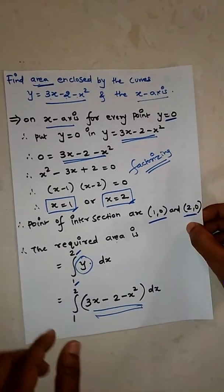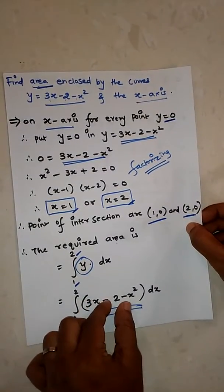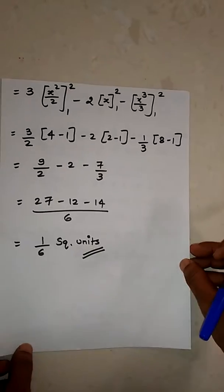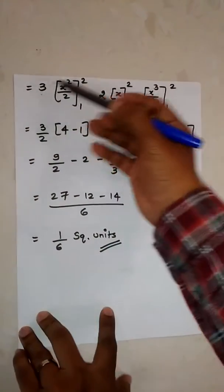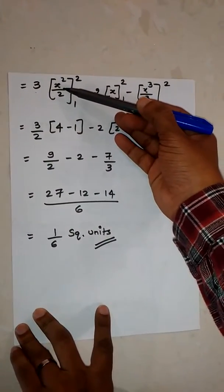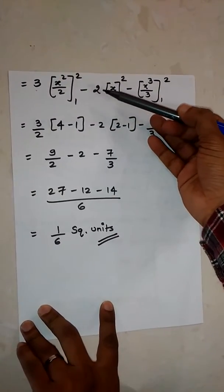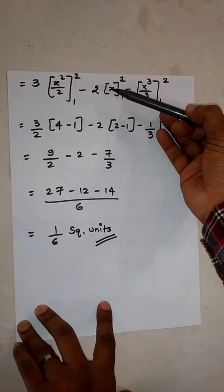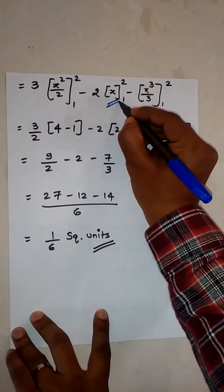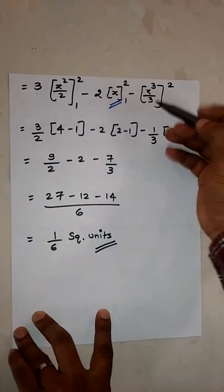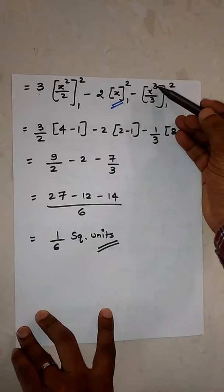In this case, individual integration. So 3 and then integration of x will be x square upon 2, minus 2 is there so integration of dx is x, minus integration of x square is x cube upon 3.